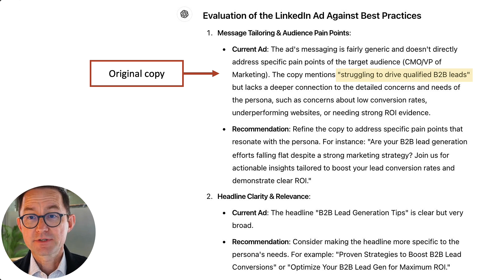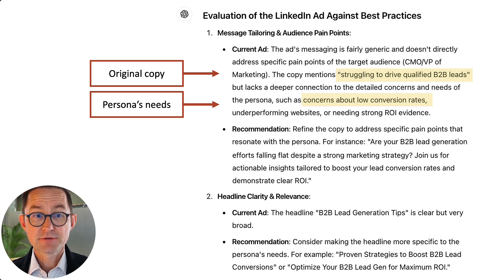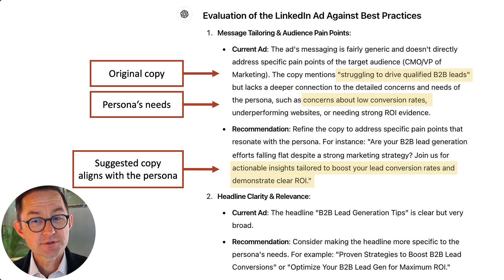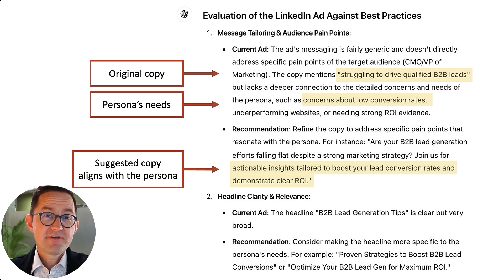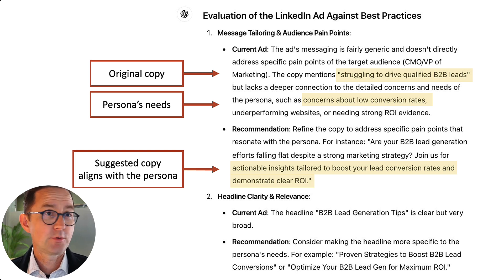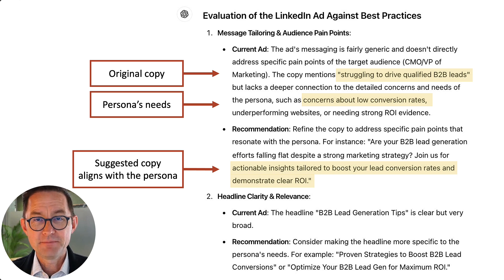It comes back. There's the original copy: 'Struggling to drive qualified B2B leads' — that's the ad that I wrote. Here's my persona's needs — they're worried about low conversion rates. It knows that I'm talking to digital marketers. And then here we go with the recommendation: 'Join us for actionable insights tailored to boost your lead conversion rates and demonstrate clear ROI.' That actually aligns very well with the persona that I gave it, because I know from experience — I've had a thousand conversations with my target audience — that they're concerned about not just driving ROI, but showing ROI. I told it the persona and I gave it criteria.